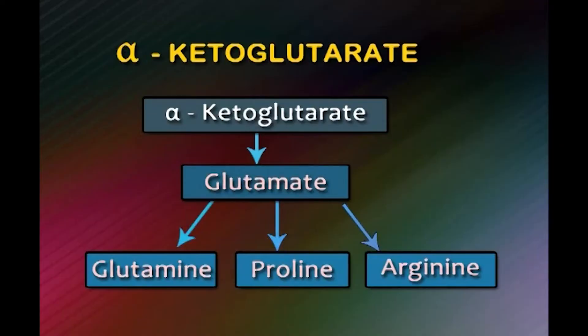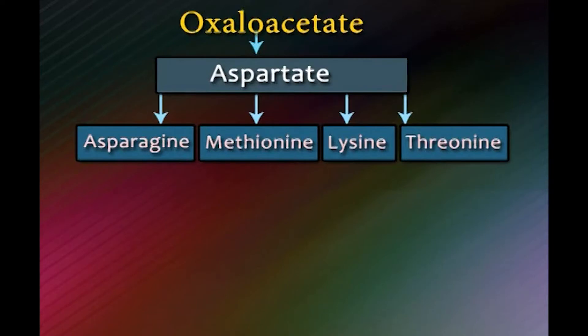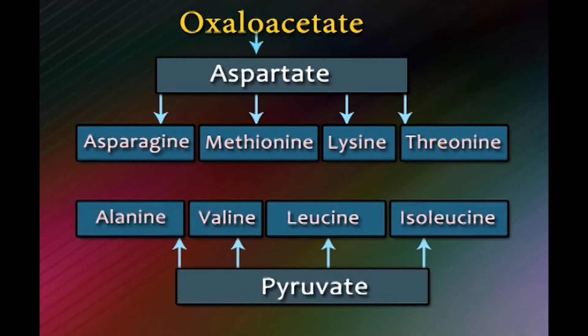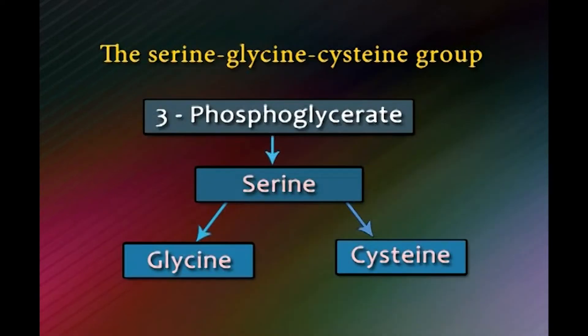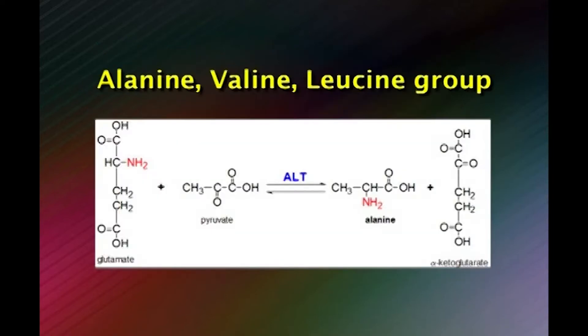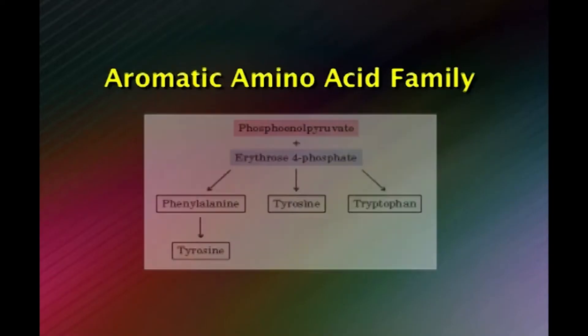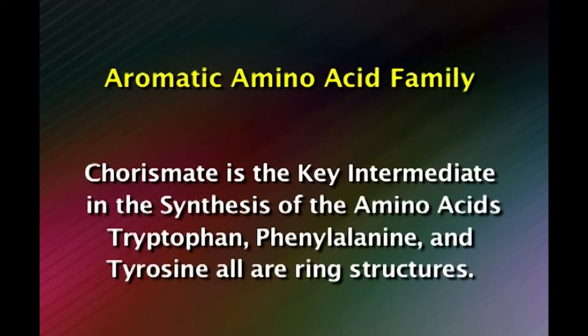Alpha-ketoglutarate gives rise to glutamate, which in turn gets converted to glutamine, proline, and arginine. Oxaloacetate gives rise to aspartate, which in turn gives rise to asparagine, methionine, lysine, and threonine. Pyruvate gives rise to alanine, valine, leucine, and isoleucine. 3-phosphoglycerate synthesizes serine, glycine, and cysteine. In the aromatic amino acid family, chorismate is the key intermediate in the synthesis of tryptophan, phenylalanine, and tyrosine — all ring structures.